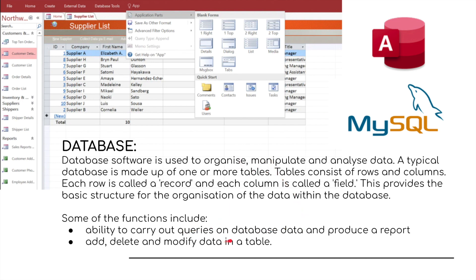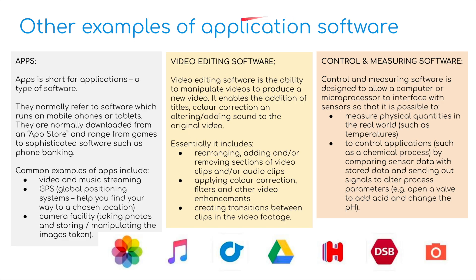You can also add, delete, and modify data in a table. Other examples of application software include apps — lots of apps on our mobile phones. They're normally software which runs on mobile phones or tablets, downloaded from an app store, and range from games to sophisticated software such as phone banking. Common examples include video and music streaming, GPS (global positioning systems) to help you find your chosen location, and camera facilities for taking and storing photographs.